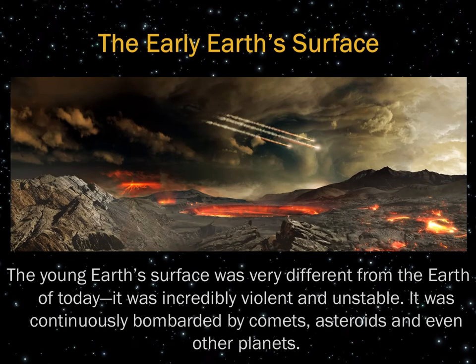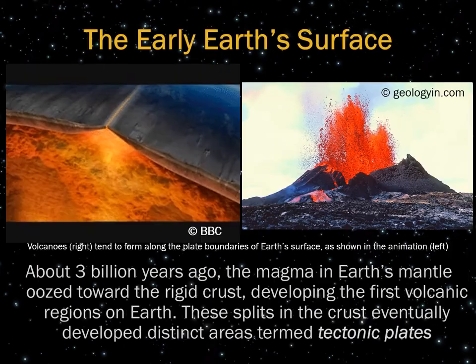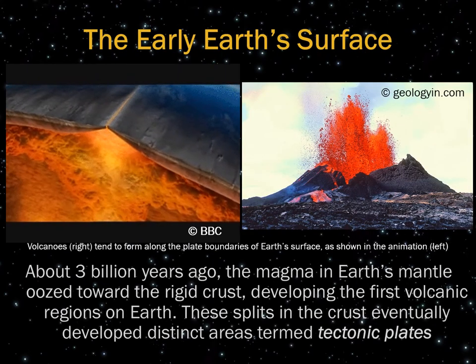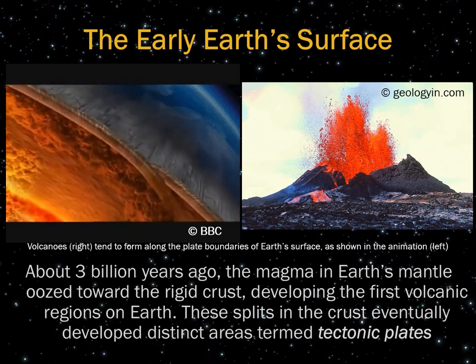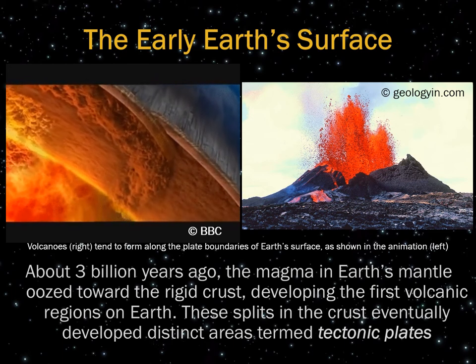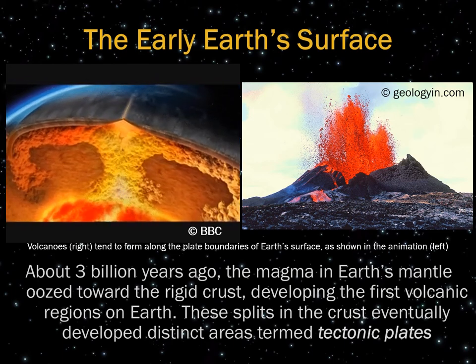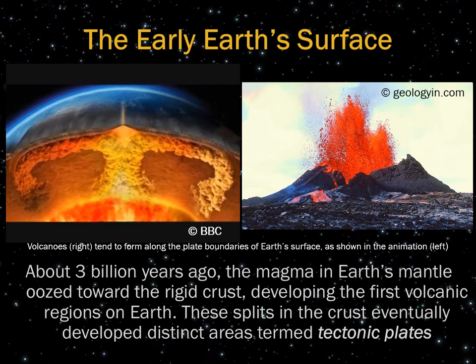The early Earth's surface was very different — incredibly violent and unstable, continuously bombarded by comets, asteroids, and even other planets, not to mention rampant volcanic activity. During early Earth's formation, there was no oxygen in the atmosphere and no ocean for the first billion years. About three billion years ago, magma in Earth's mantle began to ooze toward the rigid crust, developing the first volcanic regions known as ridges and trenches. These splits in the crust eventually developed distinct areas we term tectonic plates.